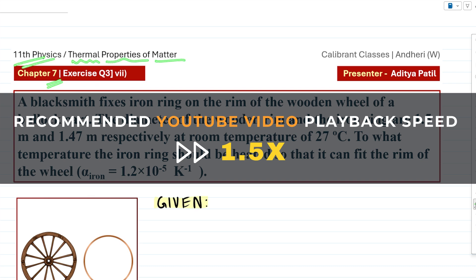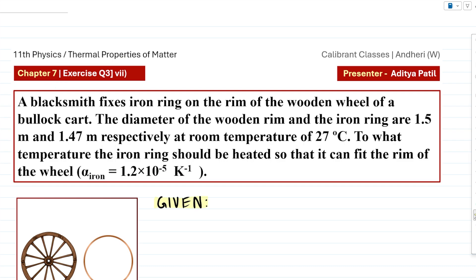Now our question says that a blacksmith fixes iron ring on the rim of the wooden wheel of a bullock cart. The diameter of the wooden rim and the iron ring are 1.5 meters and 1.47 meters respectively at room temperature of 27 degree Celsius.